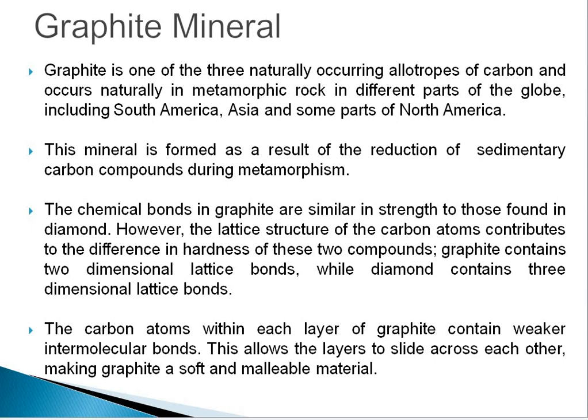Graphite mineral: Graphite is one of the three naturally occurring allotropes of carbon and occurs naturally in metamorphic rock in different parts of the globe, including South America, Asia, and some parts of North America. The mineral is formed as a result of reduction of sedimentary carbon compounds during metamorphism. The chemical bonds in graphite are similar in strength to those found in diamond. However, the lattice structure of carbon atoms contributes to the difference in hardness of these two compounds.